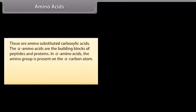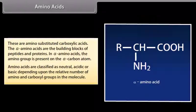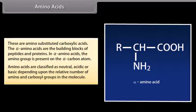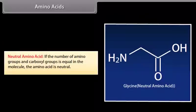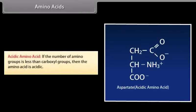Amino acids are amino-substituted carboxylic acids. The alpha-amino acids are the building blocks of peptides and proteins; in alpha-amino acids, the amino group is present on the alpha-carbon atom. Amino acids are classified as neutral, acidic, or basic, depending upon the relative number of amino and carboxyl groups. Neutral amino acid: equal numbers of amino and carboxyl groups (e.g., glycine). Basic amino acid: more amino groups than carboxyl groups (e.g., lysine). Acidic amino acid: fewer amino groups than carboxyl groups (e.g., aspartate).